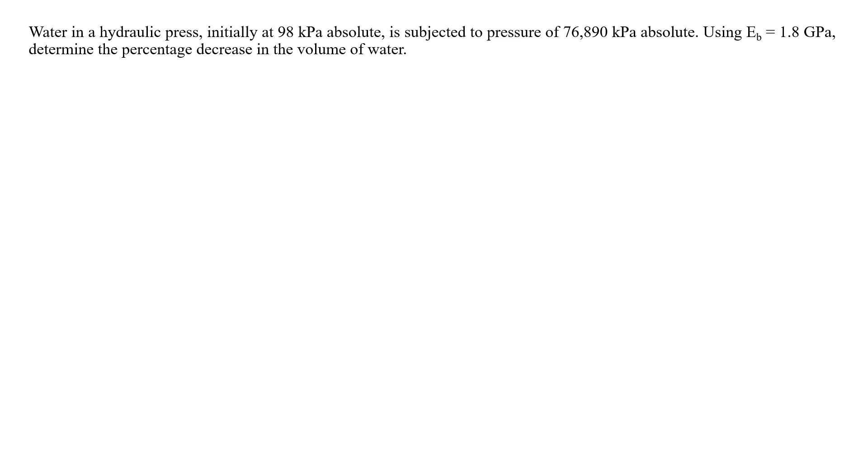which is the bulk modulus of elasticity. Water in a hydraulic press, initially at 98 kPa absolute, is subjected to pressure of 76,890 kPa absolute. Using E_D = 1.8 GPa, determine the percentage decrease in the volume of water.